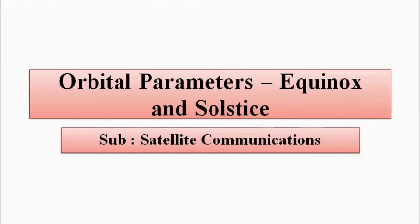These two events affect the communication between earth and the satellite orbiting around the planet. Earth is orbiting around the sun, and we have a satellite orbiting around earth. So the position of the sun and earth in relation to each other also has an impact on the communication between earth and satellite.